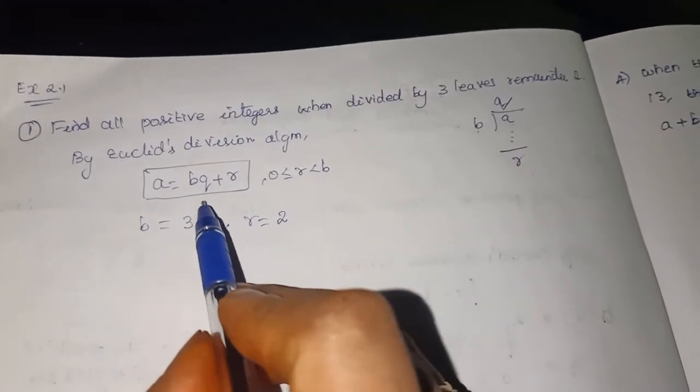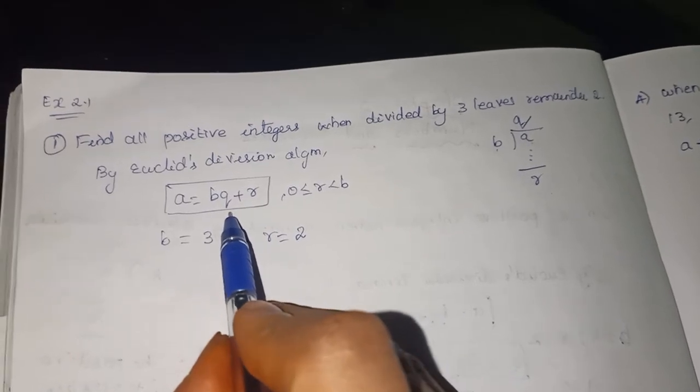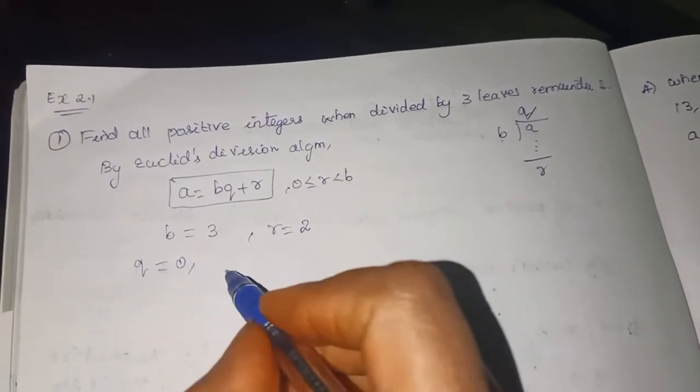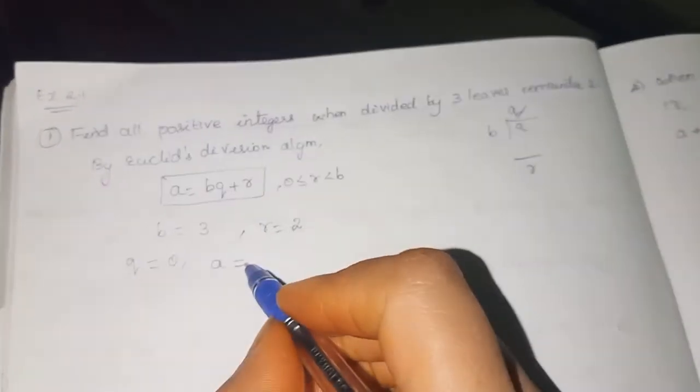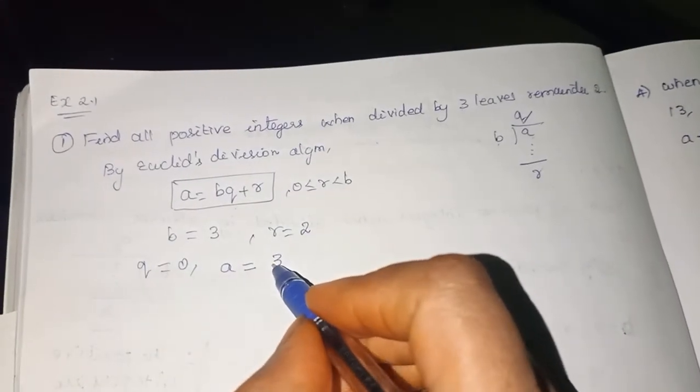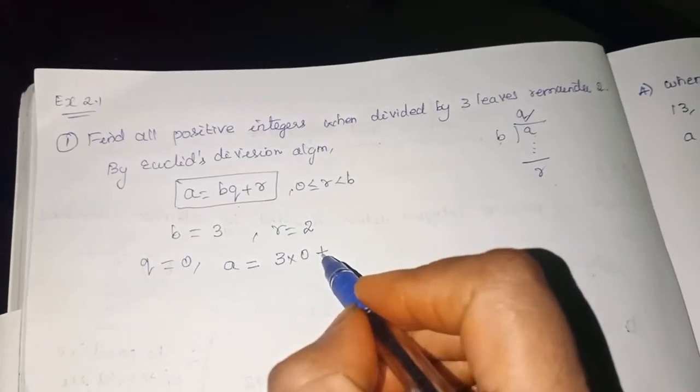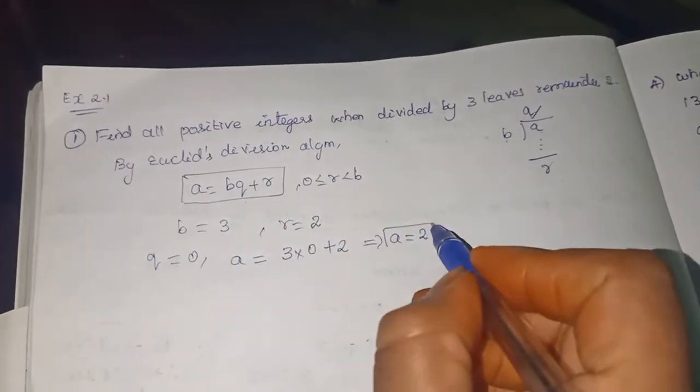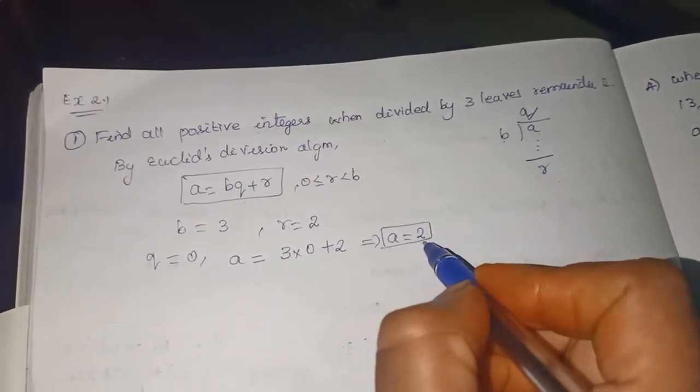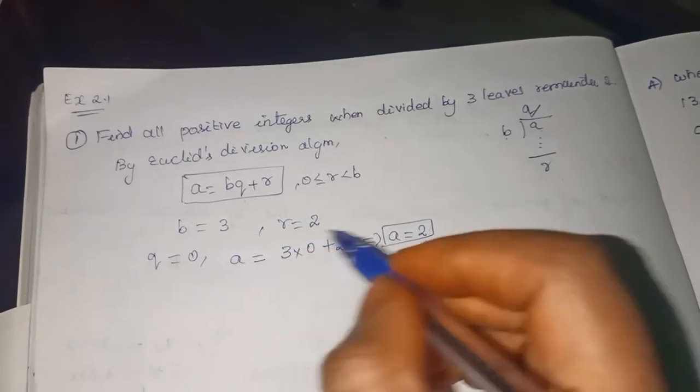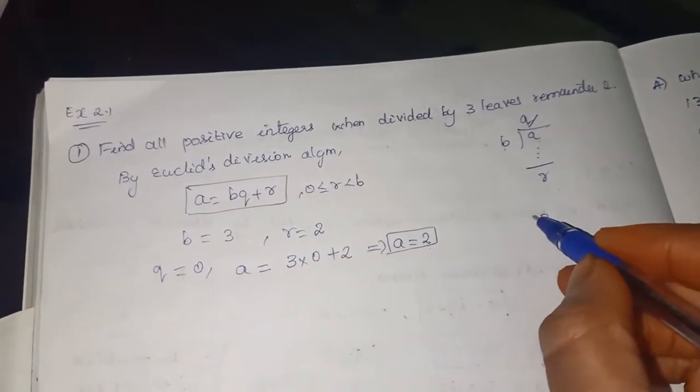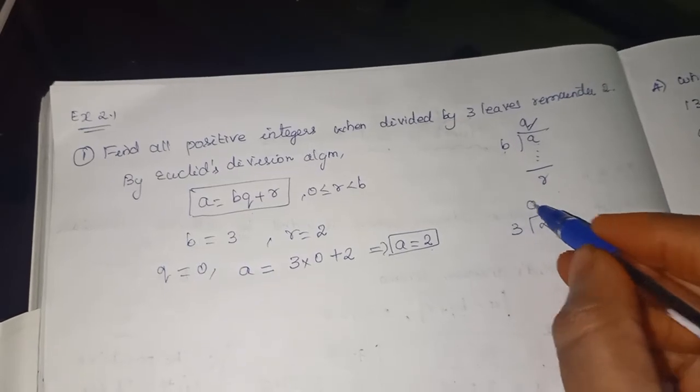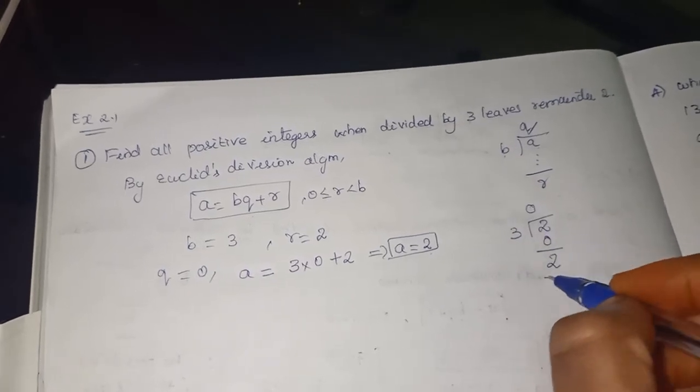So the only unknown value is Q. So start applying. Q is equal to 0. What will happen? A is equal to B is what? 3 into 0 plus 2. So A is equal to 2. First positive integer. So when 2 is divided by 3, it won't go, right? So 0, 3 is 0, 2 is the remainder.